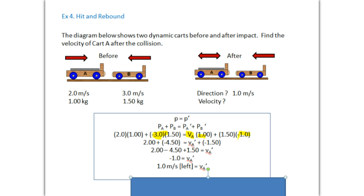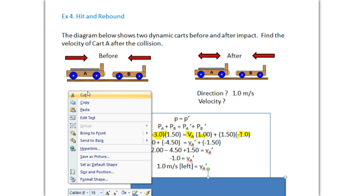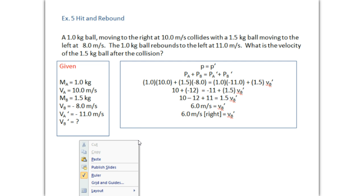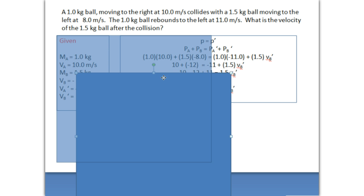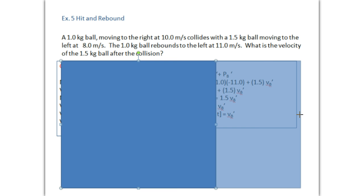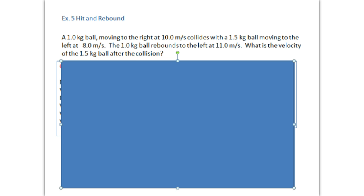All right, we'll look at another example now of hit and rebound. So one kilogram ball moving to the right at 10 meters per second collides with a 1.5 kilogram ball moving to the left at 8 meters per second. The 1 kilogram ball rebounds to the left at 11 meters per second. What is the velocity of the 1.5 kilogram ball? Now if you wanted, I didn't provide a diagram, but if you want to draw a sketch for yourself.